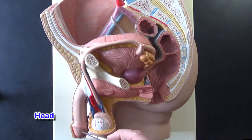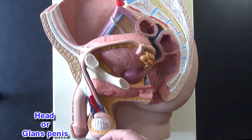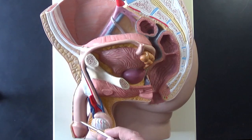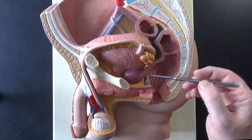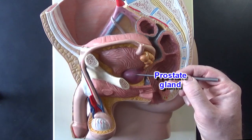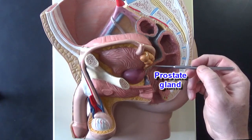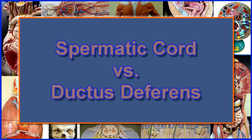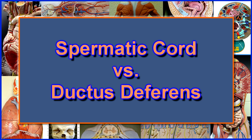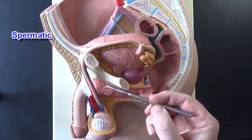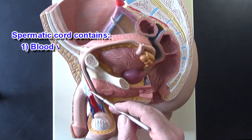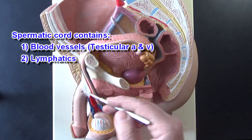This right here is the penis. This is the head of the penis, or the glans penis, and you can see a fold of skin right here — this would be the foreskin. This is the prostate gland right here, and this is a seminal vesicle.